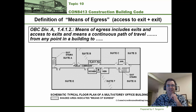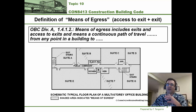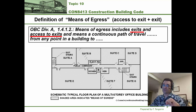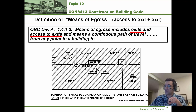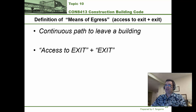The last term is means of egress, which also has a definition in the building code. Means of egress includes exits and access to exits, and means a continuous path of travel from any point in a building all the way outside. Basically, means of egress is everything — from any point in a building all the way to outside in safety. In plain English, means of egress is the continuous path to leave a building safely. It's basically access to exit plus the exit as defined by the building code.